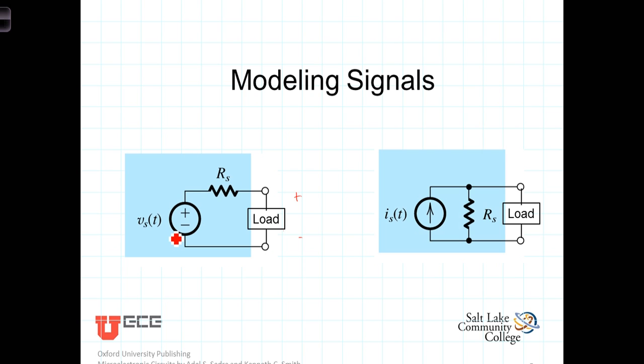On the other hand, if we're using a Norton model, the load will introduce a current division, and the current being developed by the transducer will be modeled as part of it going through the source resistance and the rest of it going through the load.